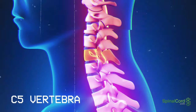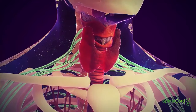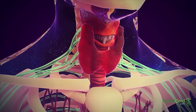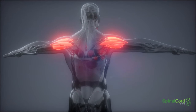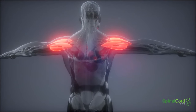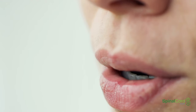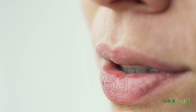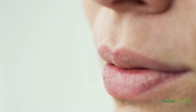C5 vertebrae: Damage of the spinal cord at the C5 vertebrae affects the vocal cords, biceps, and deltoid muscles in the upper arms. Unlike some of the higher cervical injuries, a patient with a C5 spinal cord injury will likely be able to breathe and speak on their own.